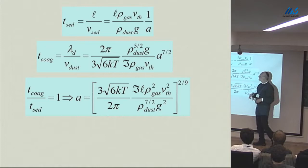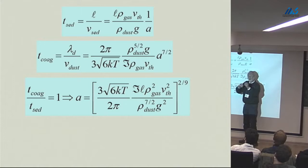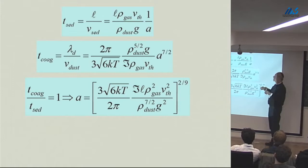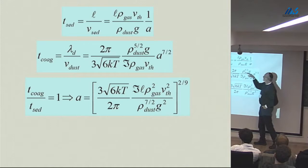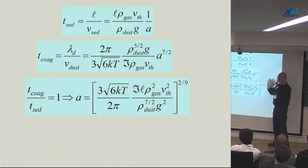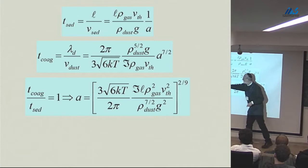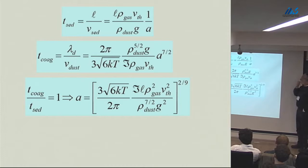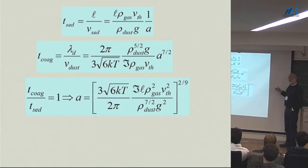If the grains are really big, they'll fall out before they get a chance to grow. If they're really small, they'll just sit there and grow. What determines the grain size is when the sedimentation timescale equals the coagulation timescale — set that equal to 1 and that gives you a grain size. You can then use that to calculate the optical depth of the layer. This is a way to deal with the dirty problem of what to do about opacities. Gas opacities are much easier to deal with.